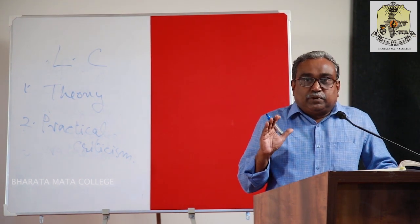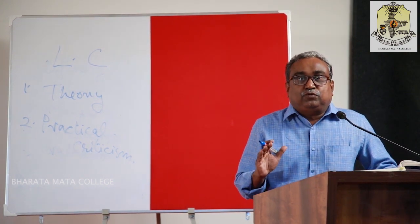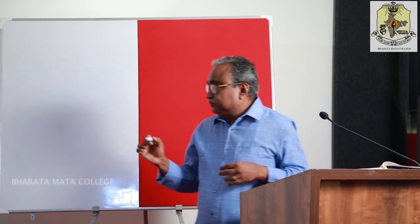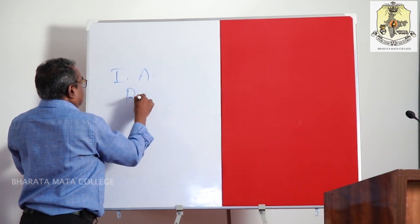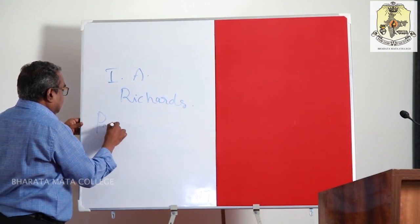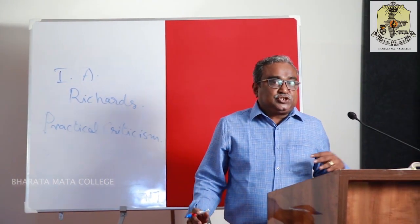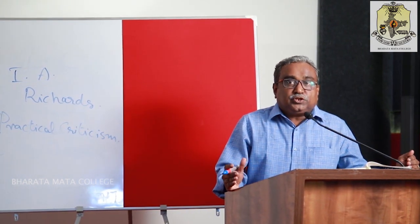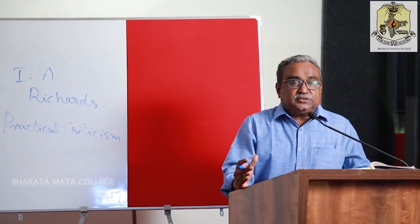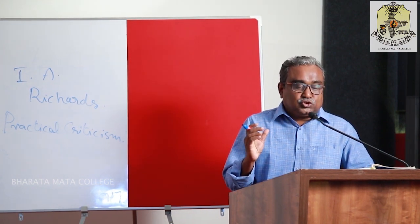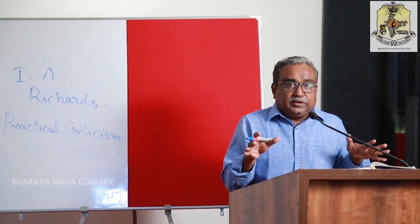I.A. Richards is the foremost person in modern criticism, with his Principles of Literary Criticism published in 1924, marking the start of practical criticism in English language and literature. His book Practical Criticism, published in 1924, is the most important landmark in applied criticism. In practical criticism, a frequent distinction is made between impressionistic criticism and judicial criticism.